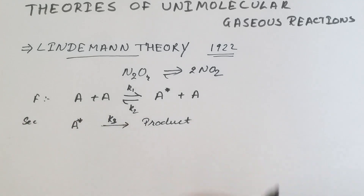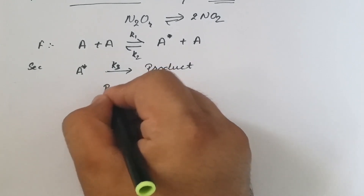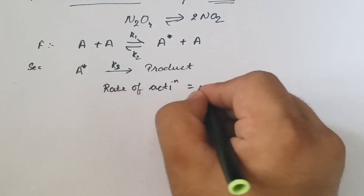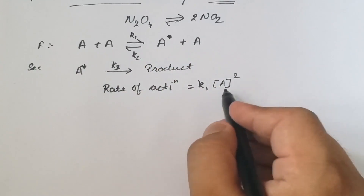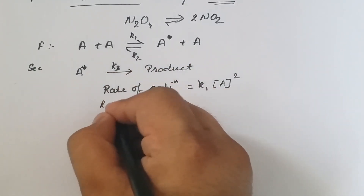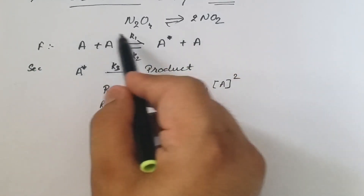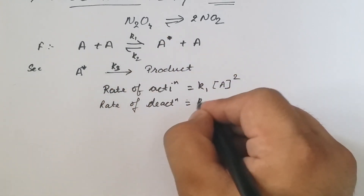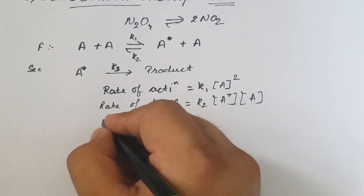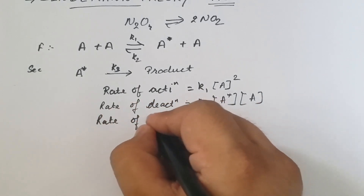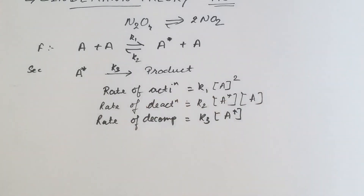To find the rate of all the steps involved: the rate of activation is k₁[A]²; the rate of deactivation, where the activated molecule returns to the starting material, is k₂[A*][A]; and the rate of decomposition or rate of formation of product is k₃[A*]. These are the three rate expressions.